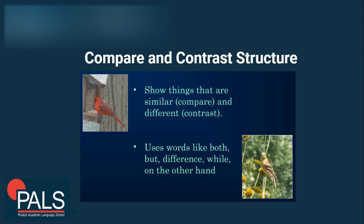There are a lot of key words, or clue words, that you will notice in a passage that utilizes compare and contrast structure. Some of these words are 'both' — when discussing similarities of two objects — and to show contrast or difference: 'while' and 'on the other hand.' Of course, these are not the only words; you will see many more depending on the length of the text and the vocabulary the writer is using.